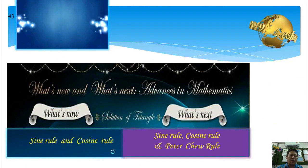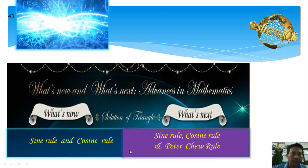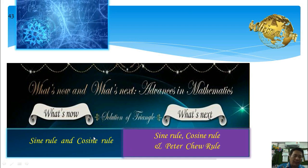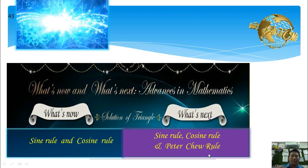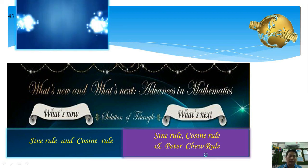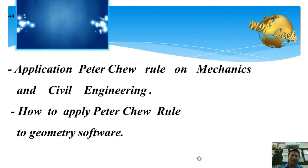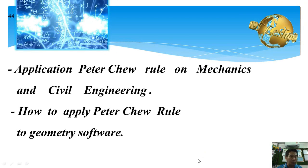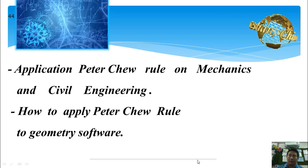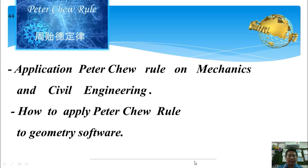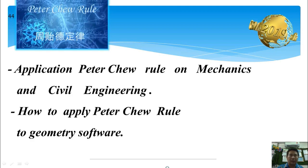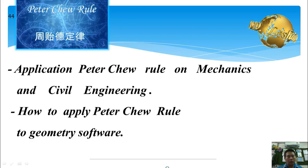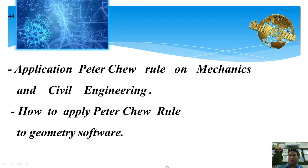As a conclusion, currently solution of triangle has only the sine and cosine rules. In the future, I believe it will include the sine rule, cosine rule, plus Peter Chiu Rule. For future research: how does Peter Chiu Rule apply to mechanical engineering and civil engineering? I have already given one example for both and will continue to research further. Also, how does Peter Chiu Rule apply to geometry software?